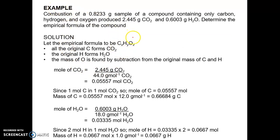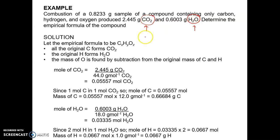Let's move to the example. The combustion of a 0.8233 gram sample of a compound containing only carbon, hydrogen, and oxygen produced 2.445 grams of CO₂ and 0.6003 grams of H₂O. We need to determine the empirical formula. Let the empirical formula be CₓHᵧOᵤ. When any compound undergoes combustion, it produces carbon dioxide and water, and we use these products to calculate the empirical formula.